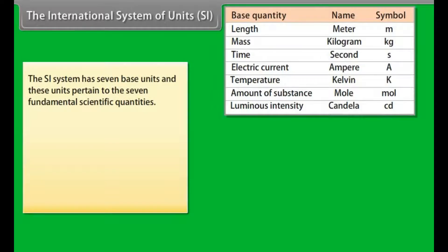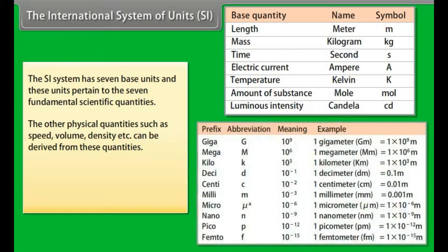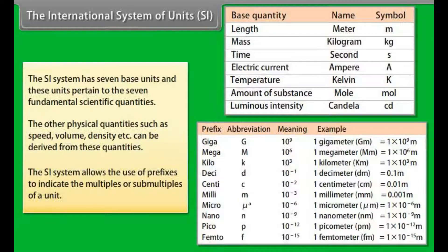The International System of Units (SI): The SI system has seven base units and these units pertain to the seven fundamental scientific quantities. The other physical quantities such as speed, volume, density, etc., can be derived from these quantities. The definitions of the SI base units are given in table. The SI system allows the use of prefixes to indicate the multiples or sub-multiples of a unit.